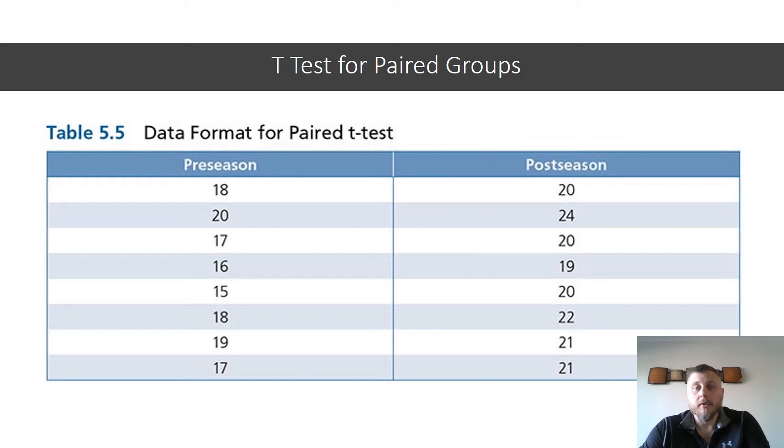Here again is the data for the varsity team pre-season serving accuracy scores contrasted against the post-season accuracy scores. So just take a second to look at what's happening here. It'll make sense on the next slide, but you can see here this first participant had a pre-season score of 18 and then post-season improved two points to a 20. So essentially it went up here, this person went up four, this person went up three, this person went up three, this person went up three.